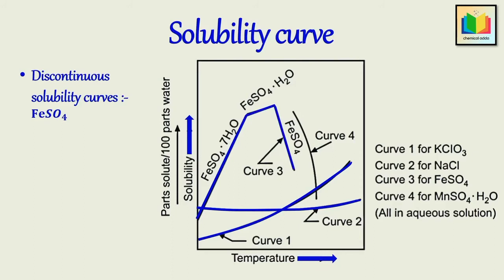And for some substances, their solubility decreases with an increase in temperature. And in such cases, their solubility curves are called as inverted solubility curves. Example solubility curve of MnSO4·H2O.